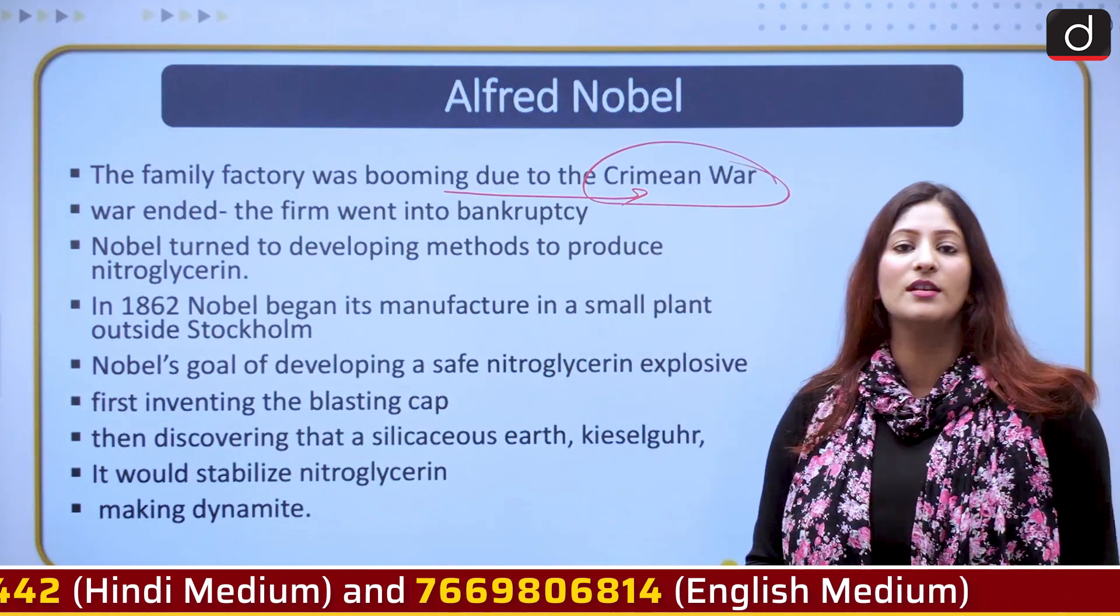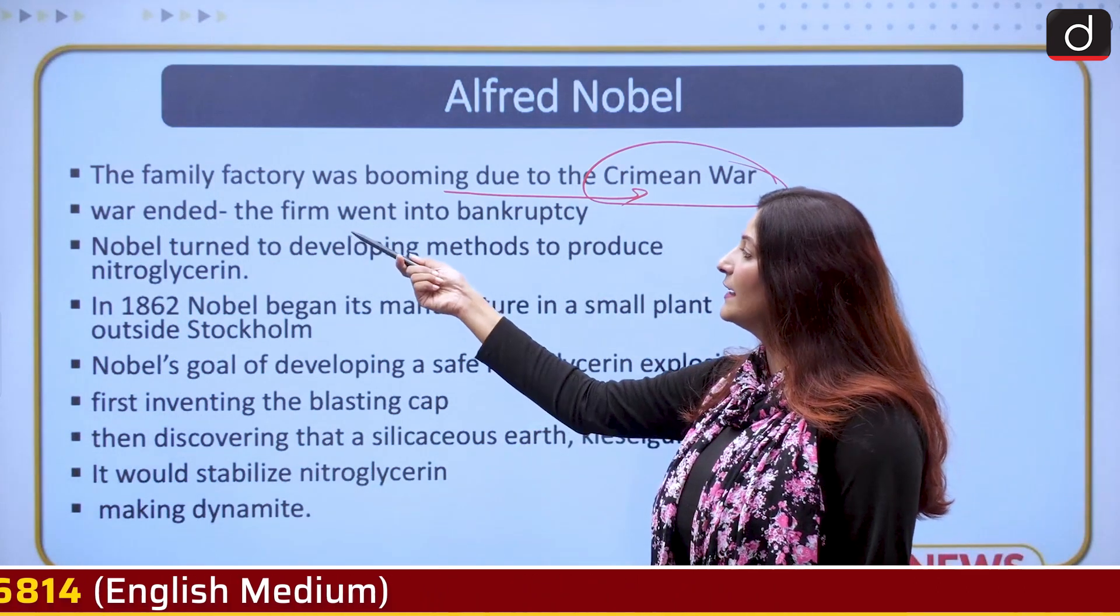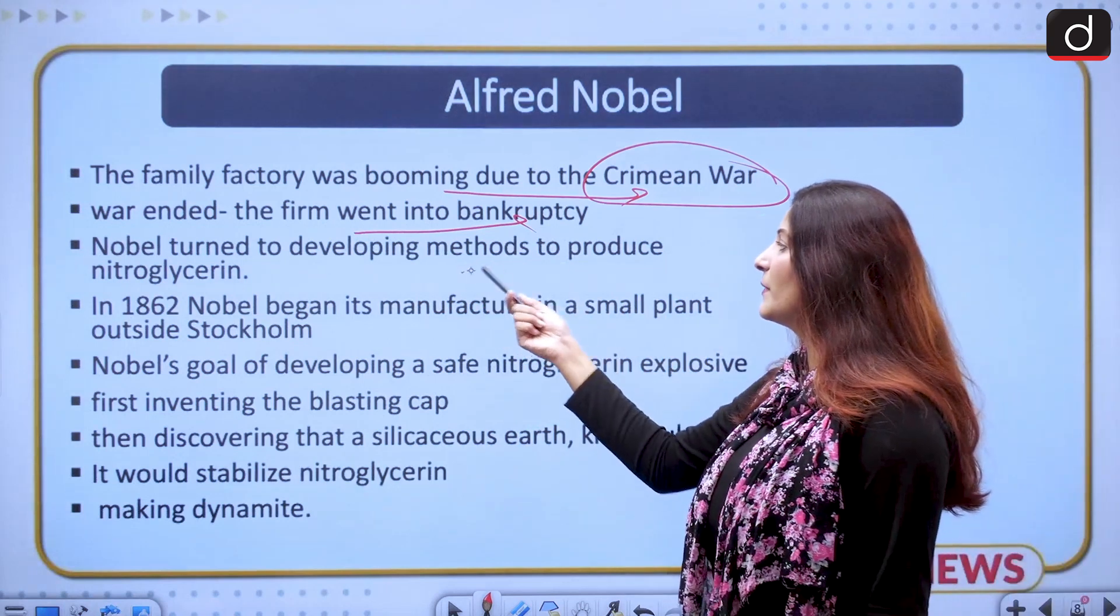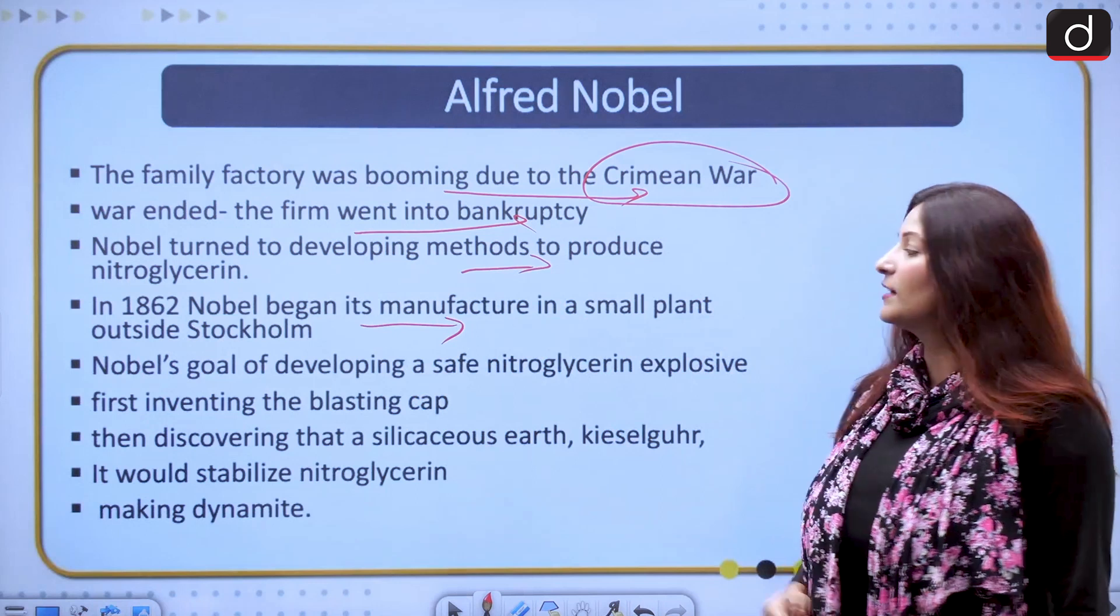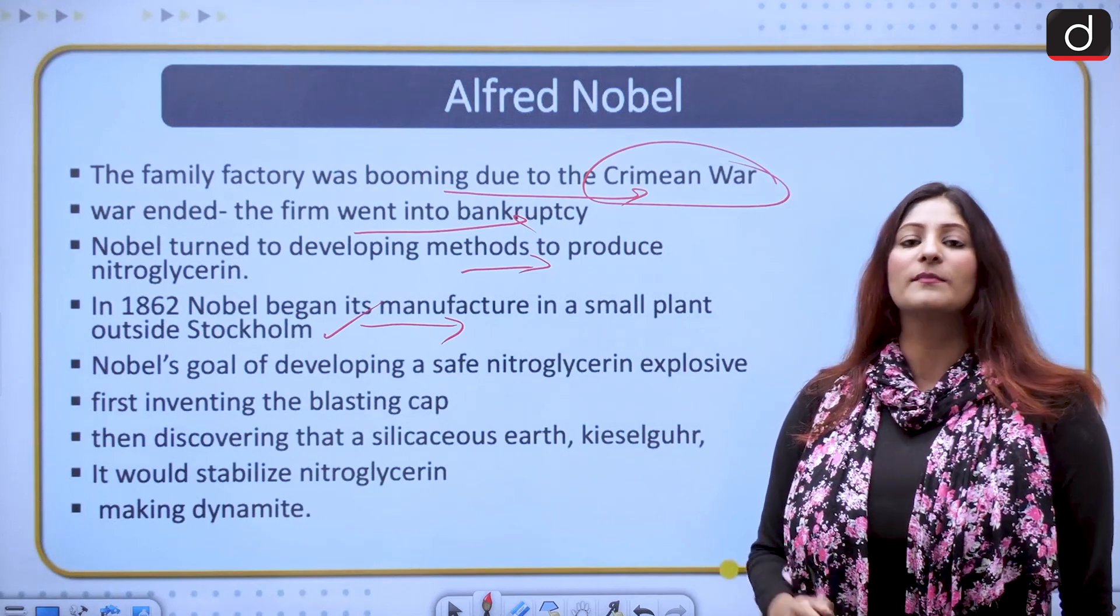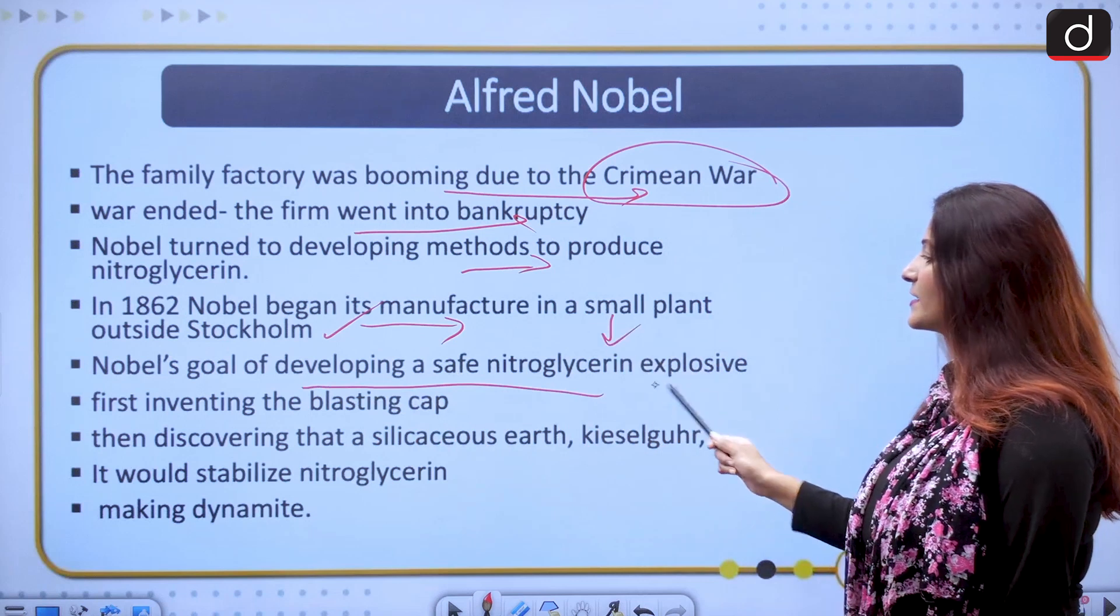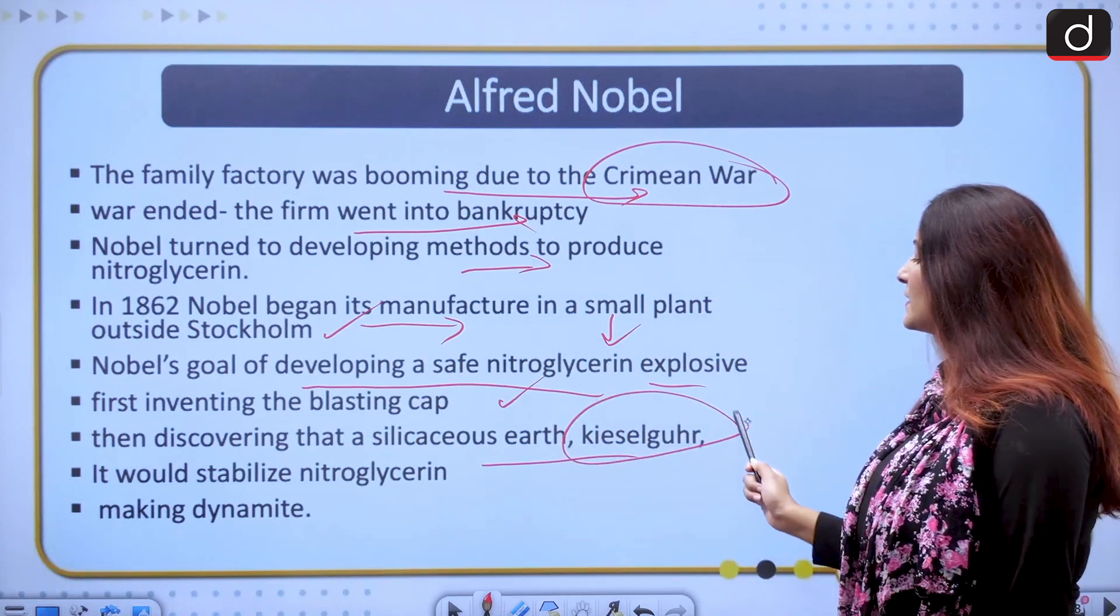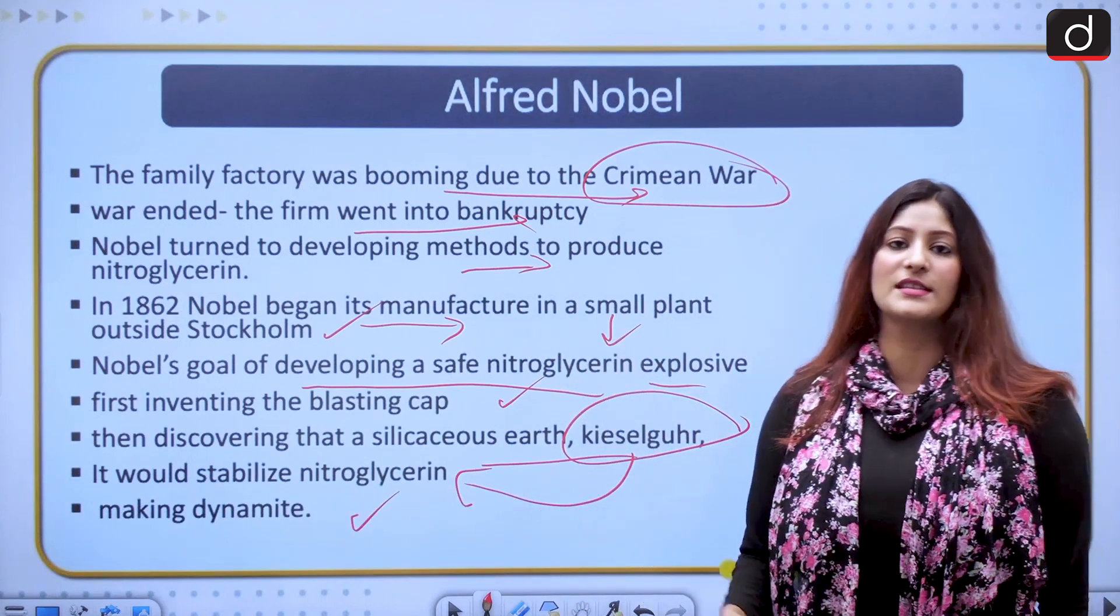Why was the Crimean War important? Because the factory used to develop military objects to supply to the Russian army. When war ended, the firm went into bankruptcy. Then Nobel along with his father started developing methods to produce nitroglycerin. In 1862, he began its manufacturing service at a small place outside Stockholm, Sweden. During that process, he lost his brother. Nobel thought that he had a goal of developing safe nitroglycerin explosion. He first invented the blasting cap and then discovered a silaceous earth by the name of Kieselguhr that would stabilize nitroglycerin. This was his goal and then he made the dynamite.